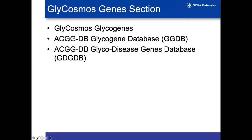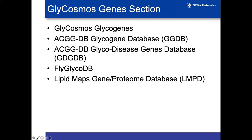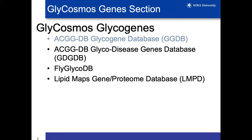Under the genes section, we have various different resources focused on various aspects of glycan-related genes. There are two resources developed by Narimatsu under the ACGGDB portal — their glycogene database and the glyco disease genes database. There's also a Drosophila glycan-related genes resource as a model organism, and we've extracted some data from the Lipid Maps database. The ACGGDB glycogene database, FlyGlycoDB, and KEGG are all integrated into Glycosmos Glycogenes.